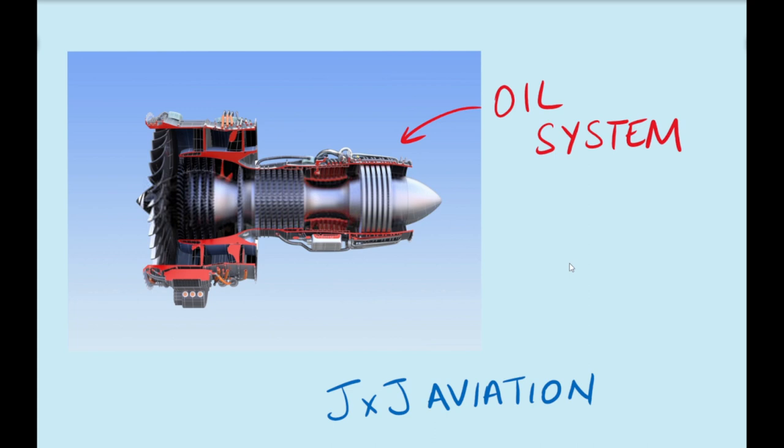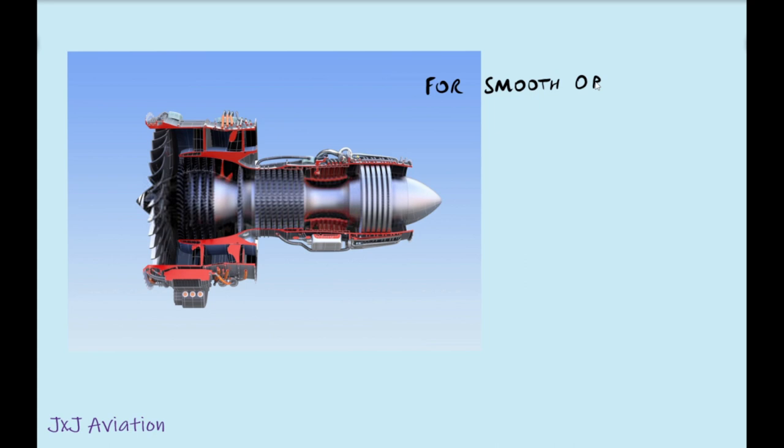On an aircraft engine there are different systems installed for smooth operation of the engine. This includes systems such as the fuel system, oil system, air bleed system, and thrust reverser system.